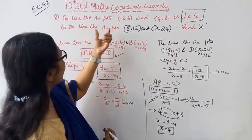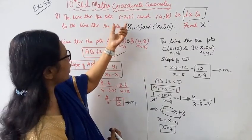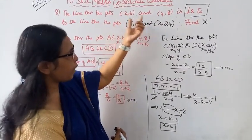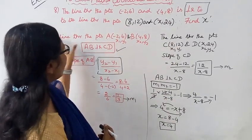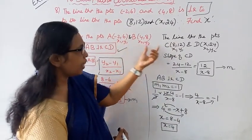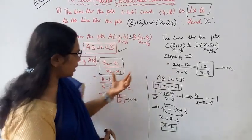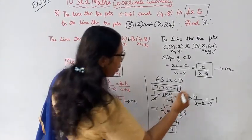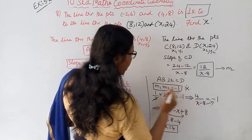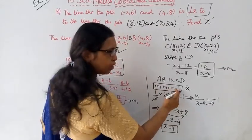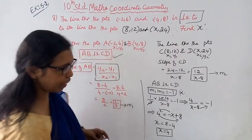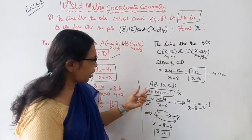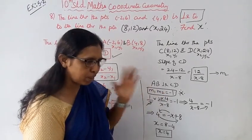So in this problem, we were given line AB and line CD. We found the slope of both lines, then applied the perpendicularity condition: M1 times M2 equal to minus 1. For parallel lines the condition is M1 equal to M2, and for perpendicular lines M1 times M2 equal to minus 1.